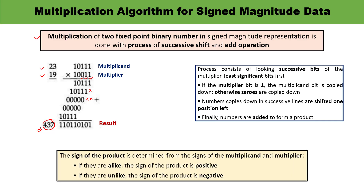Now, concerning the product sign: the sign of the product depends on the signs of the multiplicand and the multiplier. If both signs are alike — plus-plus or minus-minus — the sign of the product will be positive. If they are unlike, meaning one is positive and the other is negative, the sign of the product will be negative.